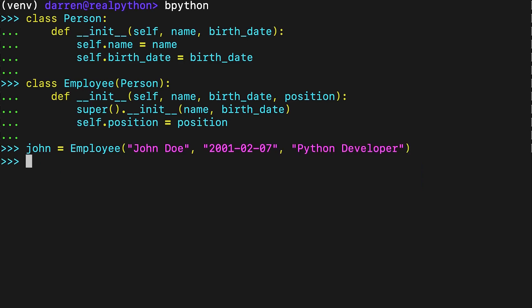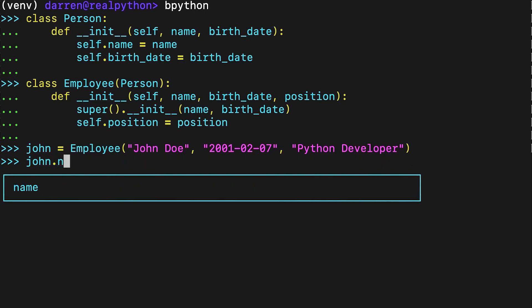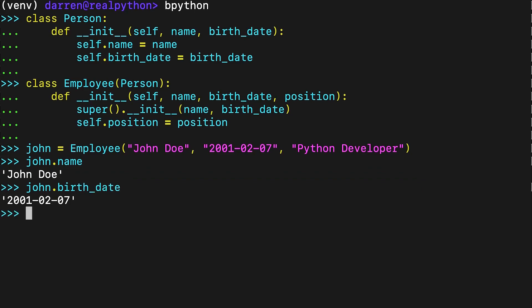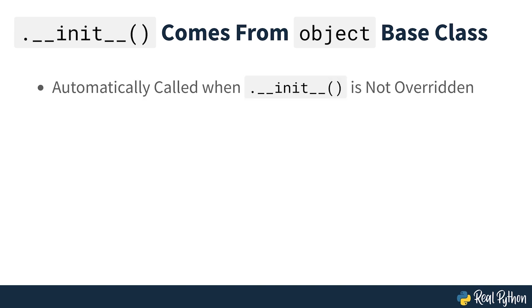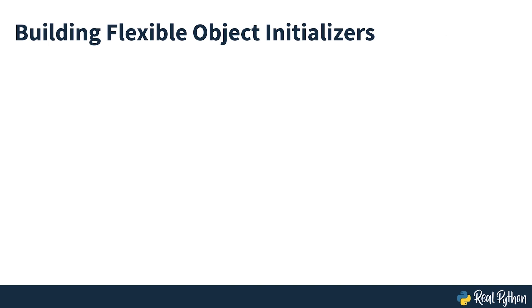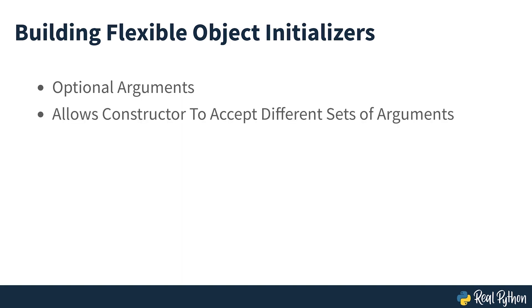This is confirmed by viewing the attributes of the John object as seen on screen. You should know that the base implementation of __init__ comes from the built-in object class, which is automatically called when you don't provide an explicit __init__ method in your classes. You can make your object's initialization step flexible and versatile by tweaking the __init__ special method. One of the most popular techniques is to use optional arguments, which allows you to write classes where the constructor accepts different sets of input arguments at instantiation time.